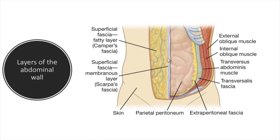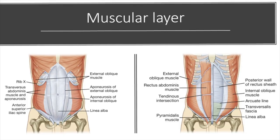You've gone through the skin, Camper's fascia, and Scarpa's fascia, and now you come across a big layer of multiple muscles. The muscular layer is composed of five main muscle groups split into the flat muscles and the vertical muscles. Starting with the flat muscles — these are the obliques. You start with the external oblique, move deeper into the internal oblique, and then end with the transversus abdominis. All these muscles begin posterolaterally and move anteriorly, where they're replaced by an aponeurosis that connects them to the abdominal midline.